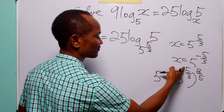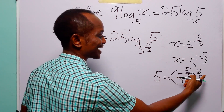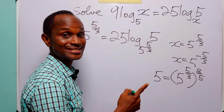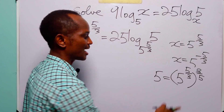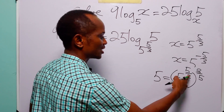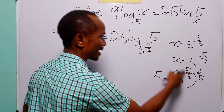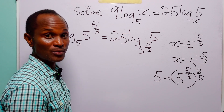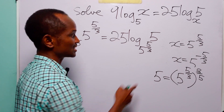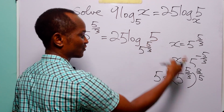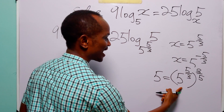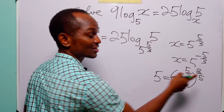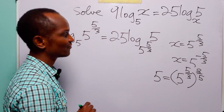...multiplying (5/3) by its reciprocal (3/5), we get 1, and 5^1 = 5. So now what we are going to do is replace this 5 with (5^(5/3))^(3/5).